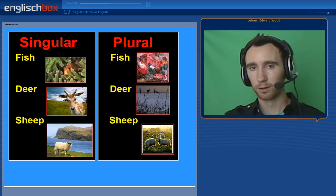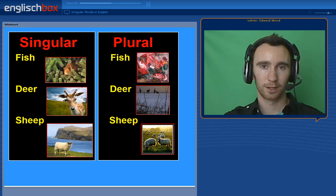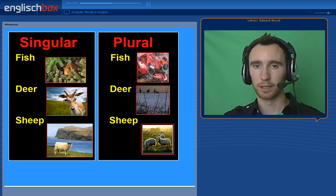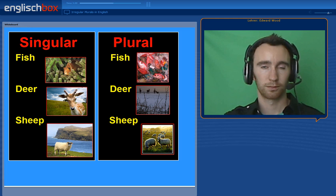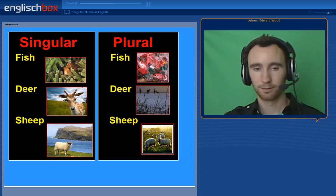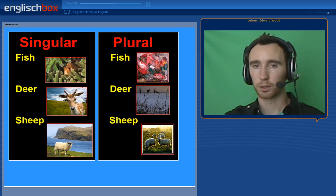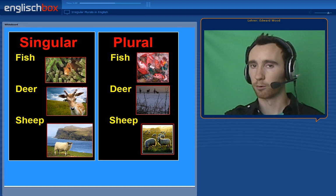Some plurals don't change from their singular form. For example, fish in singular and fish in plural — I have one goldfish, I have many goldfish. Deer and deer. And sheep and sheep. You can't have three sheeps; you have three sheep.